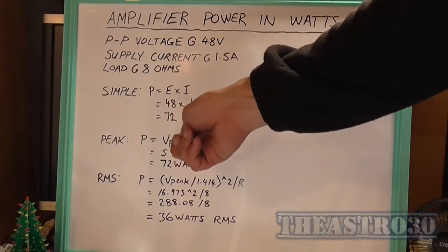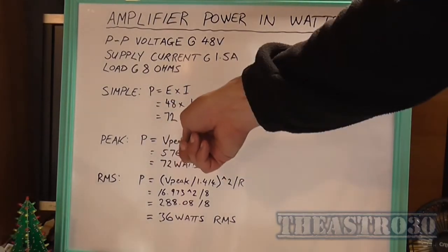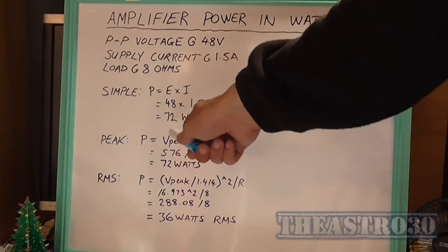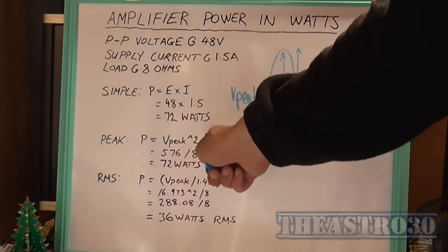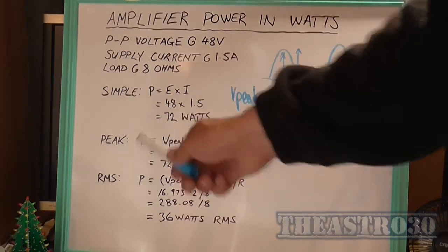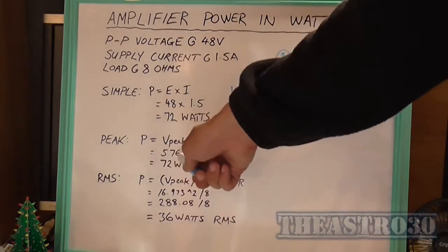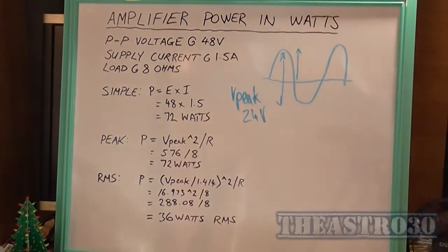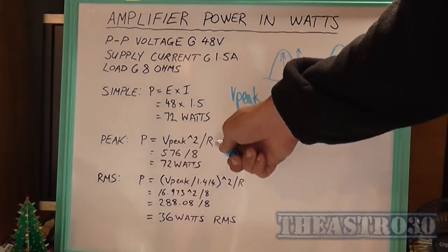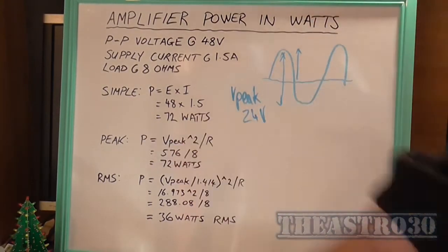Now, the way you work out the power is, you take the V peak, 24 volts, times it by itself. So that's V peak 24 to the power of 2. So 24 times 24, which equals 576, divided by your resistance, which is 8 ohms, equals 72 watts.